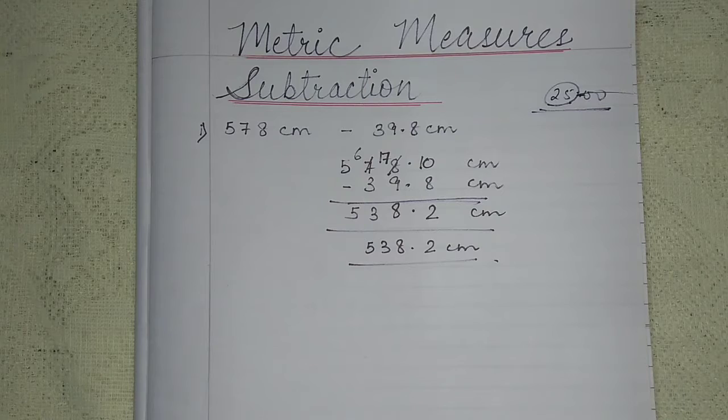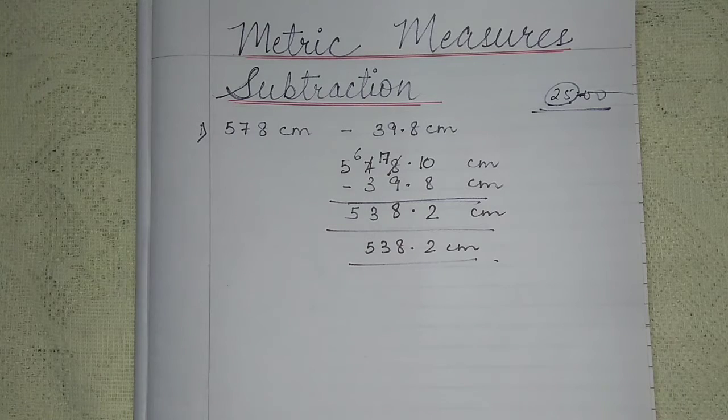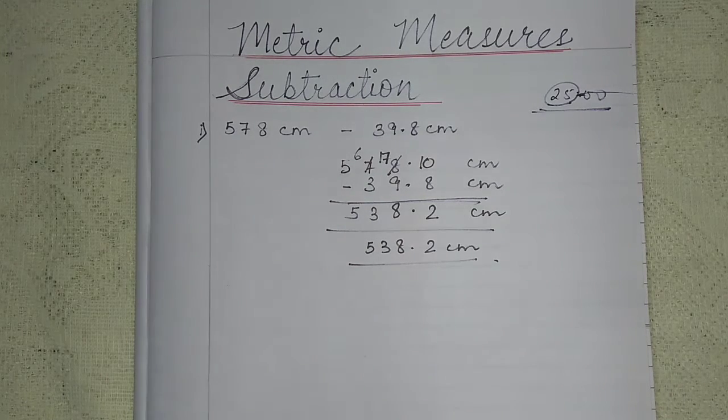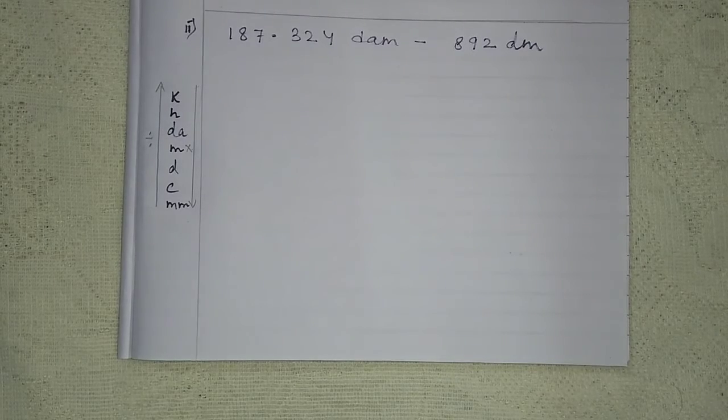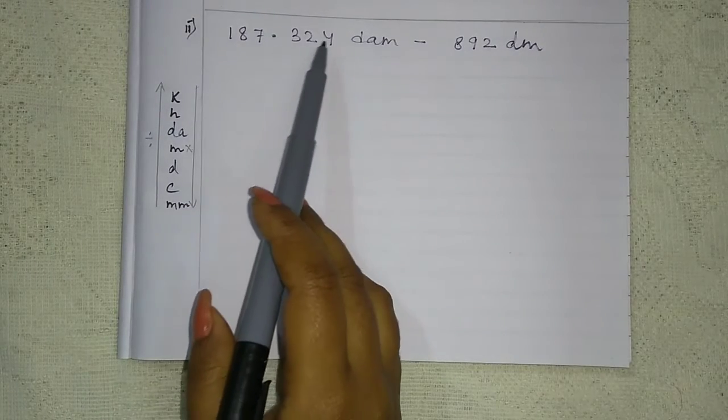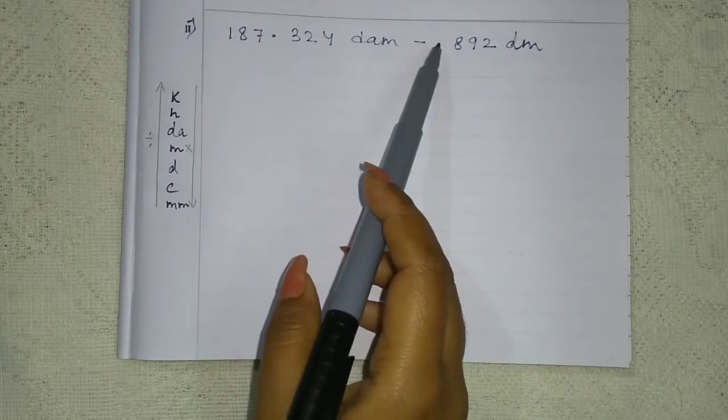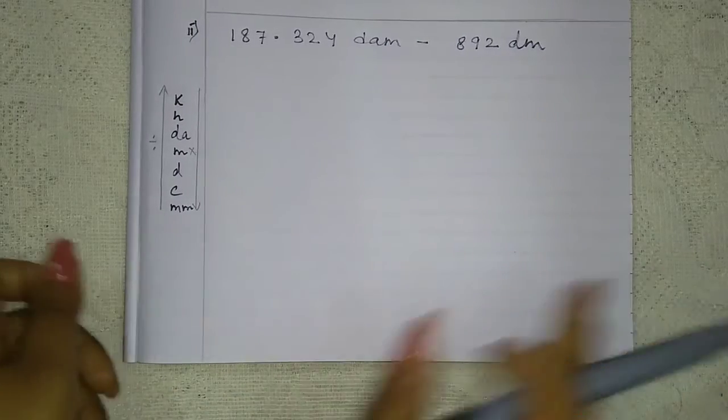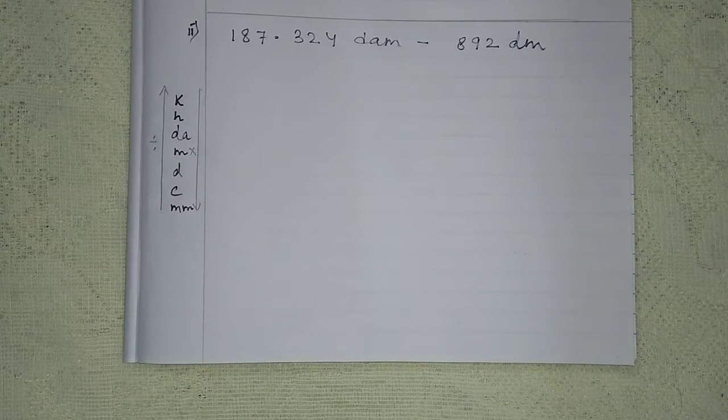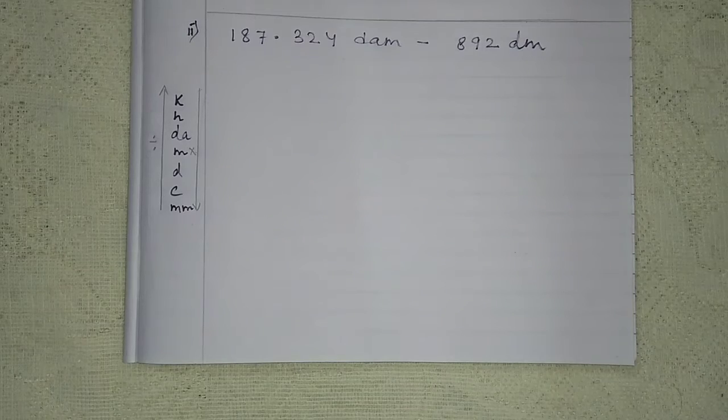Now we are going to do, we are going to see with the different unit. Okay? Let us solve one more question. So here see the second question. Here you can see 187.324 decameter minus 892 decimeter. So here deca and deci, both are two different units.